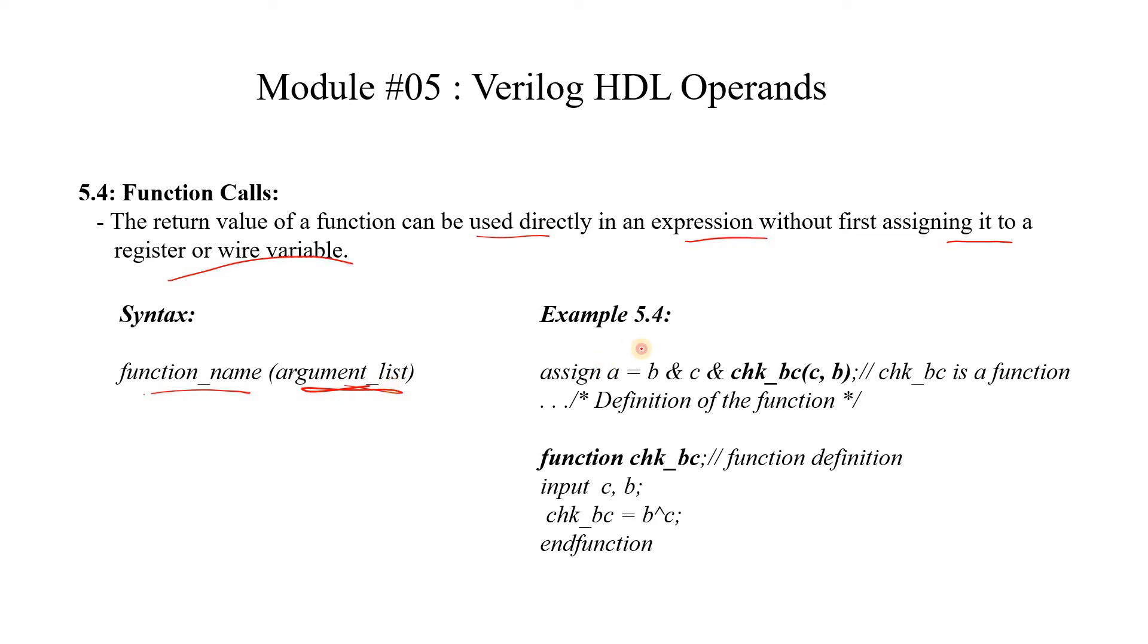Here is an example. You can see here assign a equal to b and c and check b and c. This is a function and we are passing b and c as arguments to the function. When we call this function, it will return a value that will be used in the and operation. The definition of this function check bc has two inputs c and b, and check bc is equal to b xor c. This is how the function is written and the function name itself is getting assigned the value of b xor c.